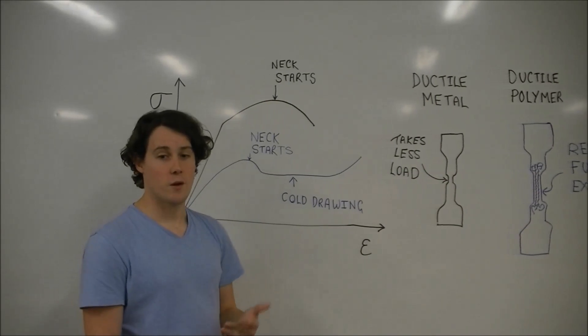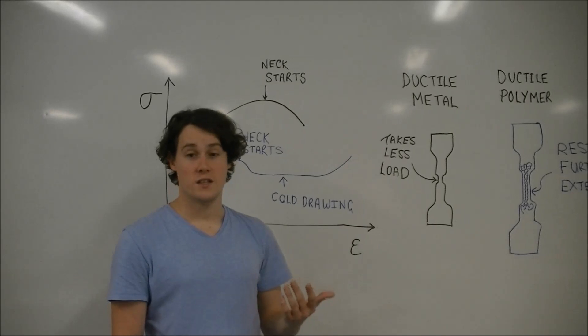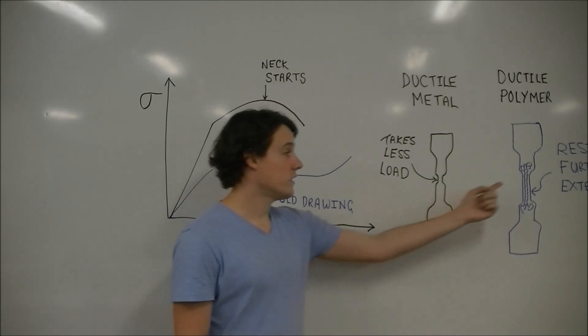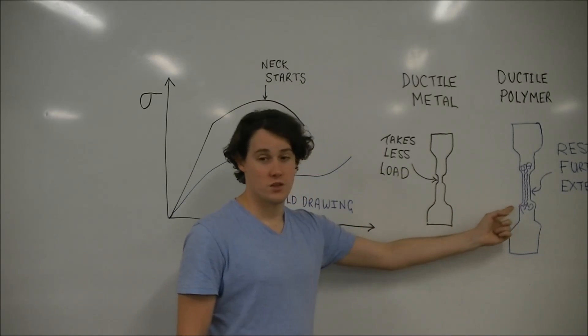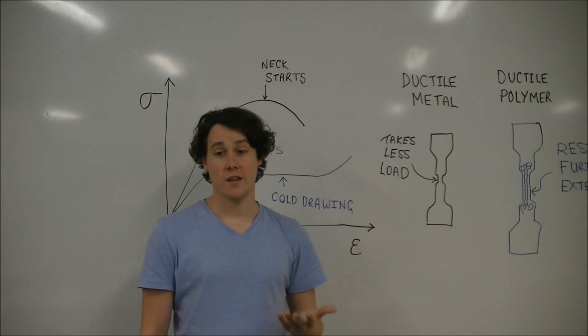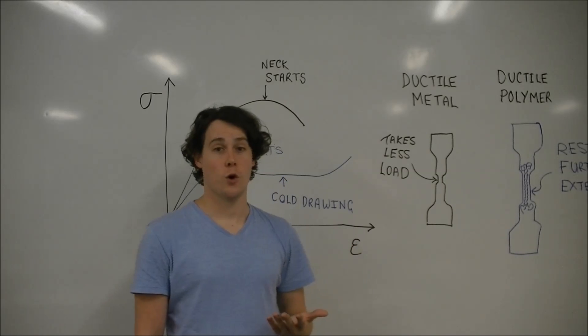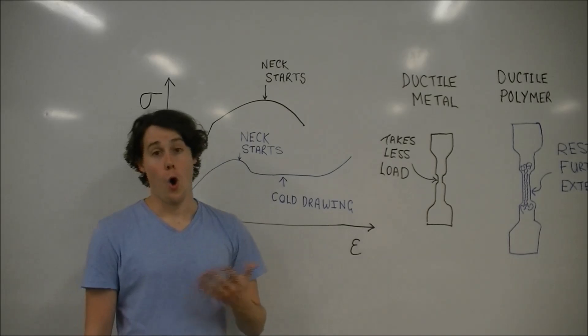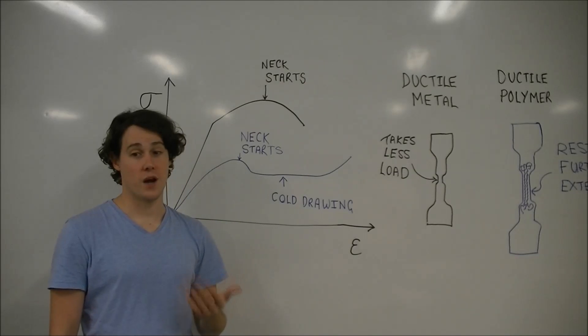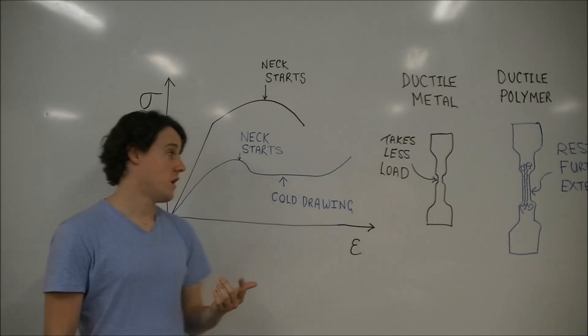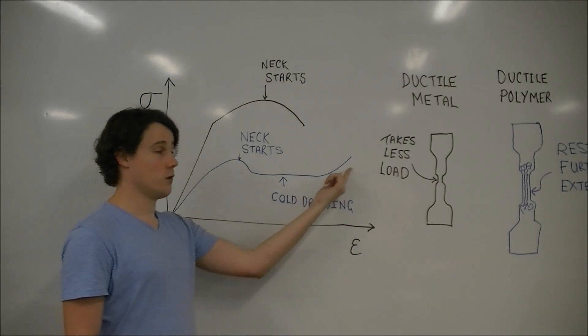As a result, the neck region becomes more resistant to further deformation, and further alignment of the polymer chains then continues to occur only in the ends of the necked region, extending along the length of the sample in a process called cold drawing. Only once the entire sample is encompassed by the neck does the sample begin to resist further extension, and we have an increase in load.